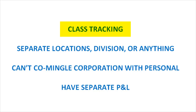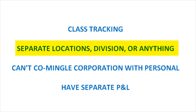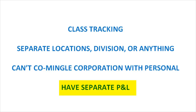Why do class tracking? This is for anyone who wants to separate two entities, locations, divisions, or anything similar — basically to compare profit and loss between one and the other. So if you have a West Coast or East Coast, you want to see which one is bringing in more income and which one is spending more money in expenses. You could do this by class tracking.